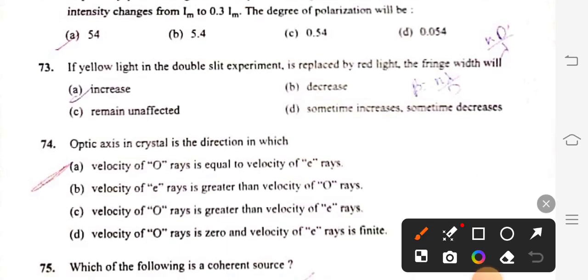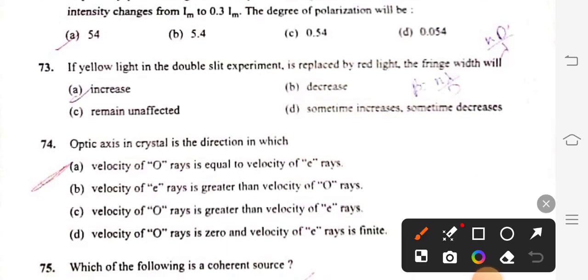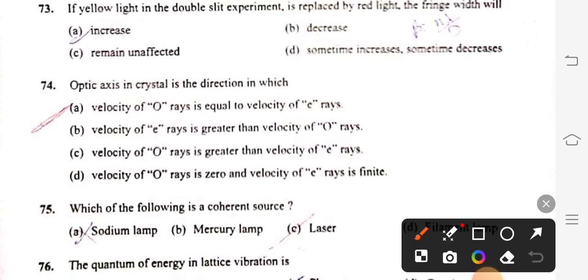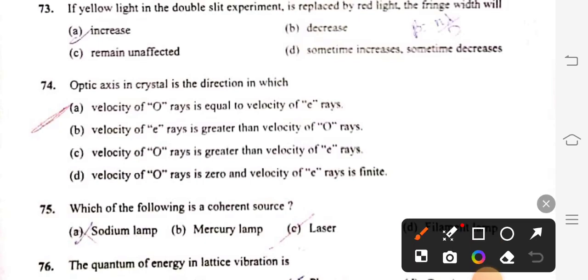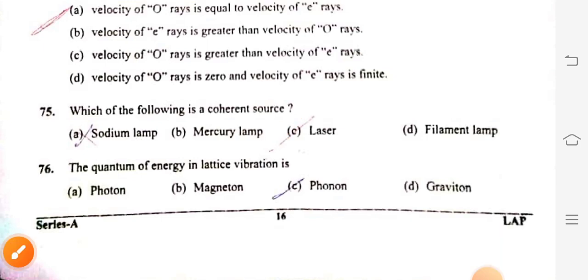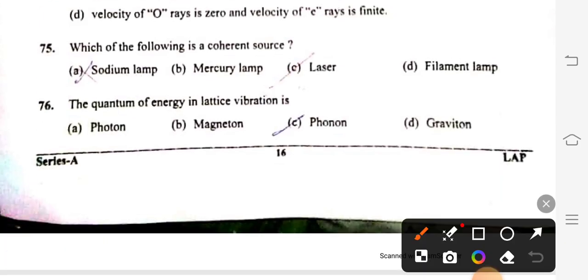Question 71: The radius of 10th zone in zone plate of focal length 20 cm for light of wavelength 5000 angstrom will be 0.001 meter, option C. Question 72: A partially polarized light beam is passed through a nickel in 90 degree rotation. The intensity changes from I maximum to 0.3 I maximum. The degree of polarization will be 54%, option A. Question 73: If yellow light in double slit experiment is replaced by red light, the fringe width will increase because red light wavelength is greater. Question 74: Optic axis in a crystal is the direction in which velocity of O rays equals velocity of E rays, option A.